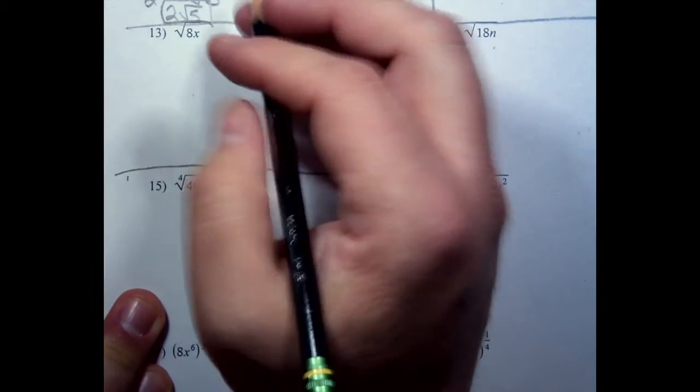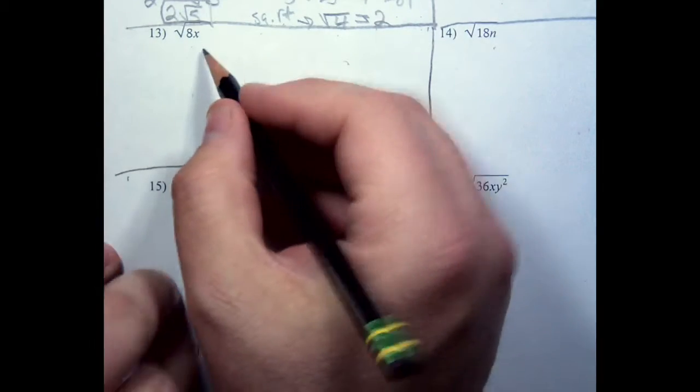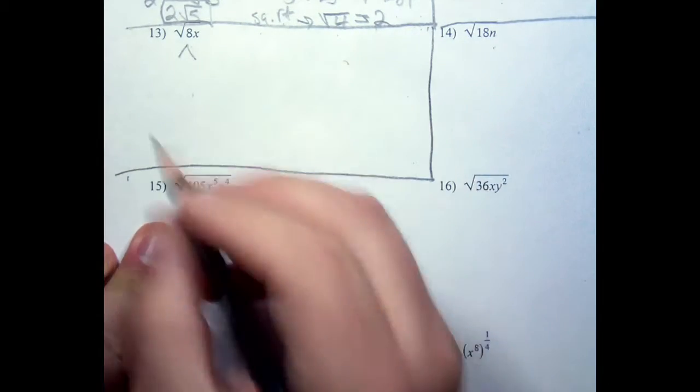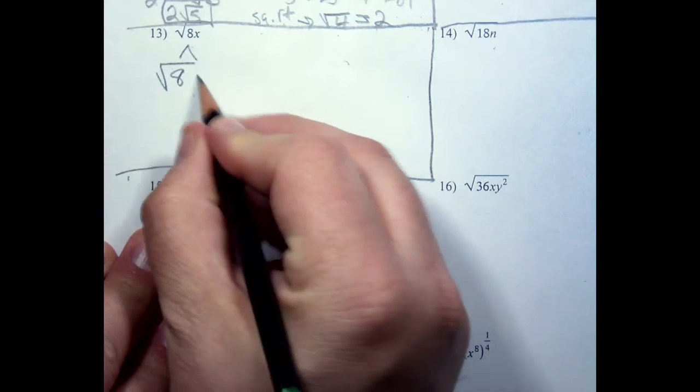Problem number 13, we have the square root thing. The first thing I'm going to do right off the bat is I'm going to separate this into the square root of 8 times the square root of x.